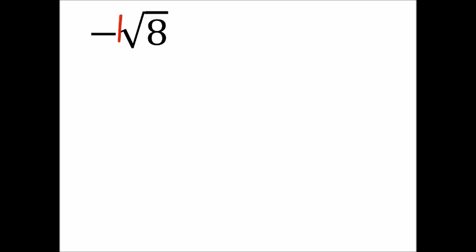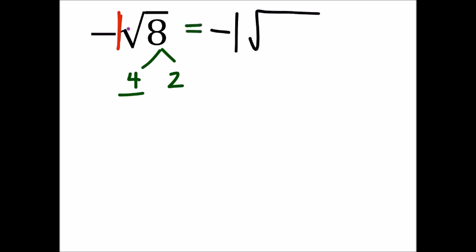We have this negative square root. We can show a phantom negative one, kind of like a phantom ten, so it's just negative one times whatever we can pull out of the square root of eight. Using method one, eight factors into four and two, and four is a perfect square. So we can rewrite this as negative one times the square root of four times the square root of two.